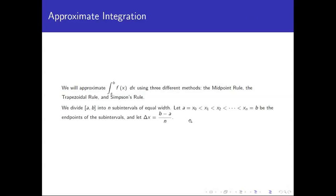Throughout this video we're going to divide our interval a to b into n sub-intervals, just as we've done before. The endpoints are x₀ = a, x₁, x₂, all the way out to xₙ = b. These are all equally spaced, and the distance between consecutive endpoints is delta x, calculated as (b minus a) divided by n.